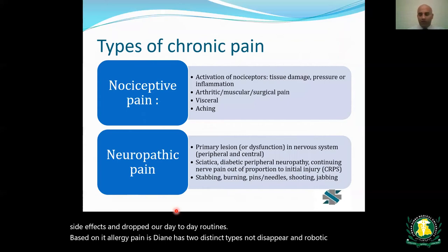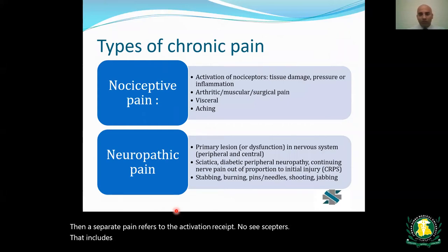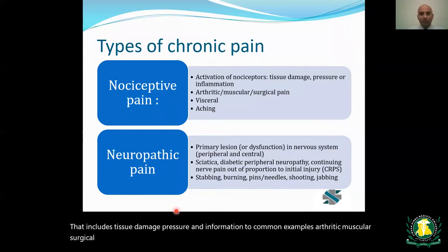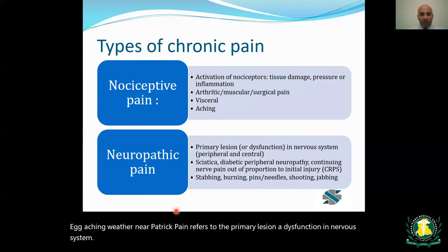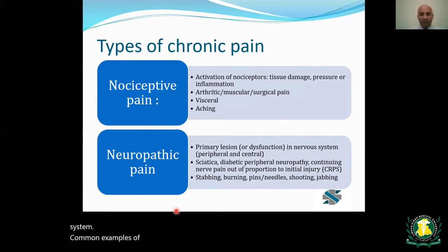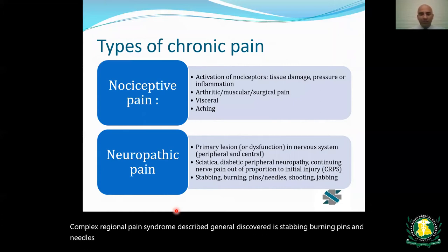Based on etiology, pain has two distinct types: nociceptive and neuropathic. Nociceptive pain refers to activation of nociceptors through tissue damage, pressure, and inflammation — common examples are arthritic, muscular, surgical, and visceral pain, described as aching. Neuropathic pain refers to a primary lesion or dysfunction in the nervous system — common examples include sciatica, diabetic peripheral neuropathy, and complex regional pain syndrome, generally described as stabbing, burning, pins and needles, shooting, or jabbing.